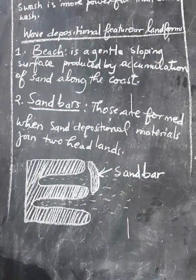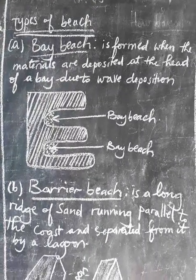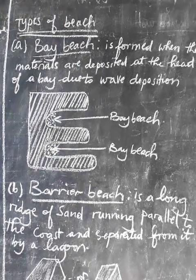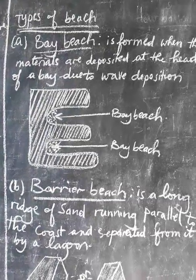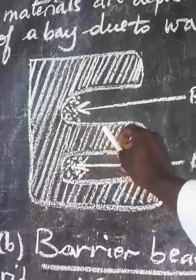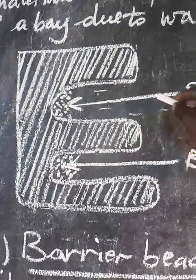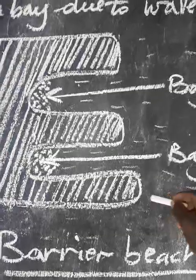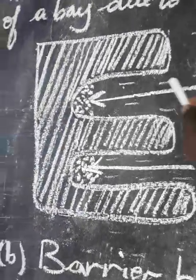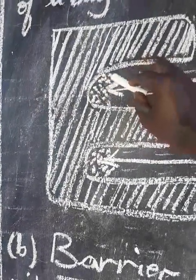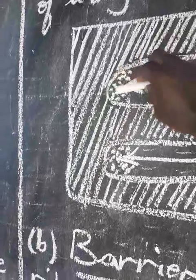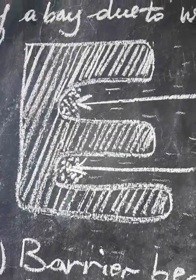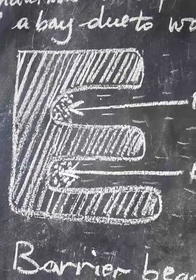Let's look at different types of beach. We have three main types. The first is a bay beach. A bay beach is formed when materials are deposited at the head of a bay due to wave deposition. A bay is a body of water entering into the land, and when sand accumulates and forms a gentle sloping surface at the head of the bay, this leads to the formation of a bay beach.